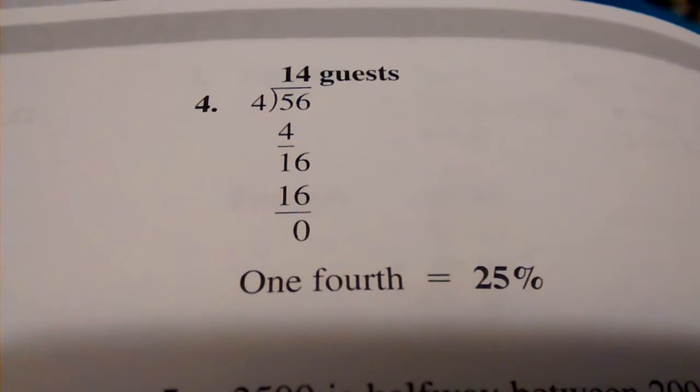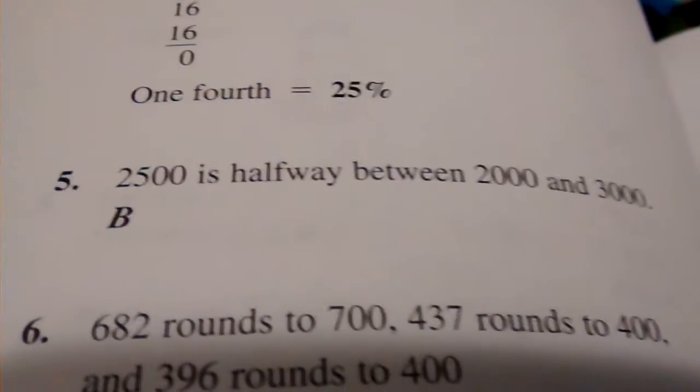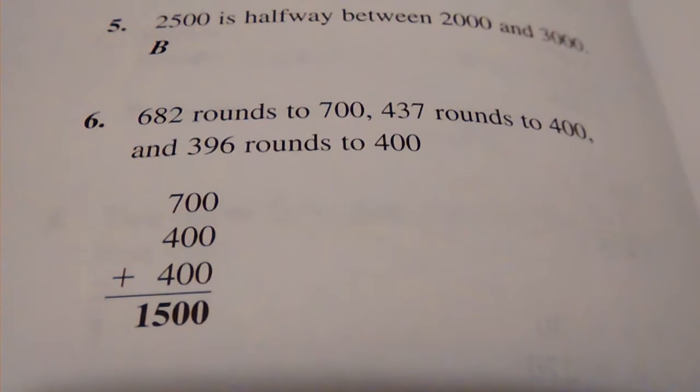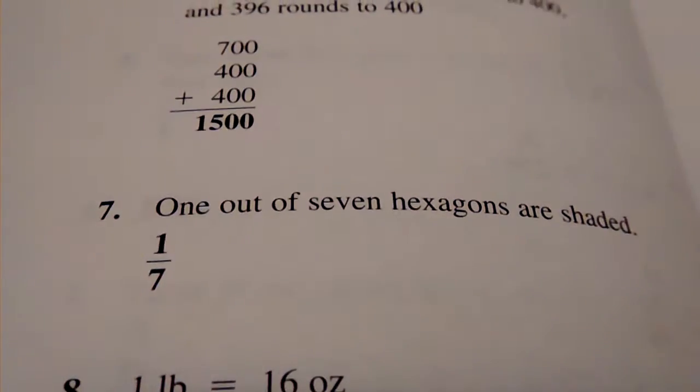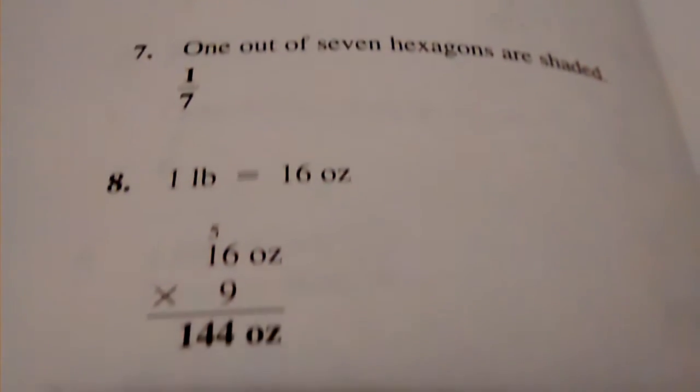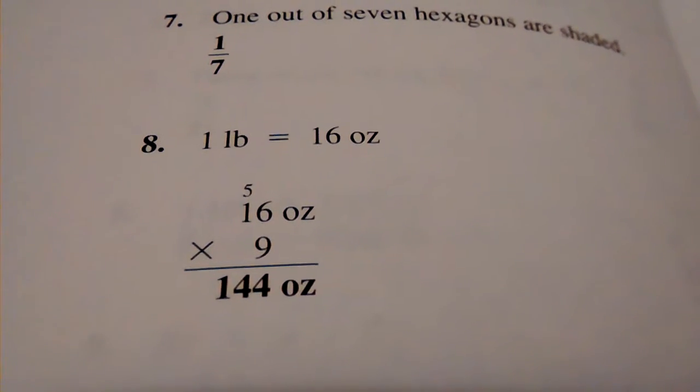1 fourth equals 25%, number 5, B. Number 6, 1500. Number 7, 1 seventh. Number 8, 144 ounces.